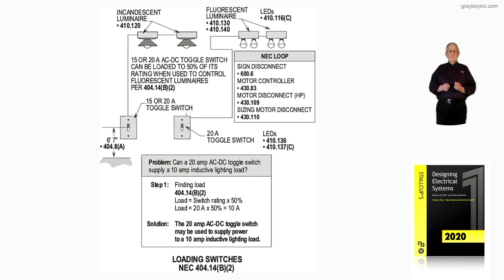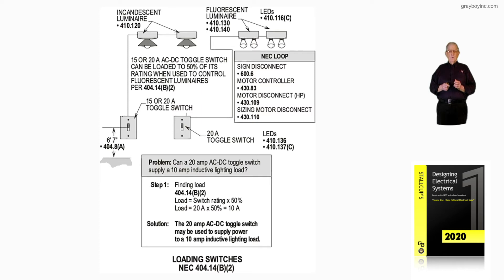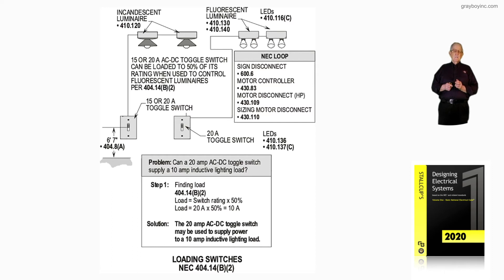The question in your problem is: can a 20-amp AC-DC toggle switch supply a 10-amp inductive lighting load? To apply the 50% rule in accordance with 404.14 B as in Boy 2, Step 1: take 50% of 20 amps, which equals 10 amps. The answer is yes — we can take 50% of that switch and feed inductive loading.